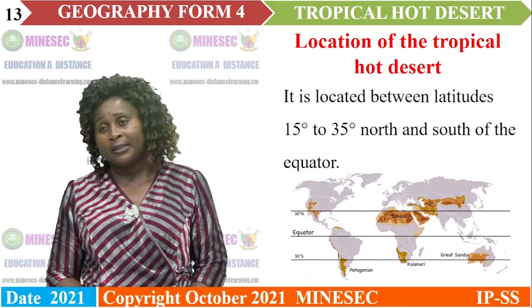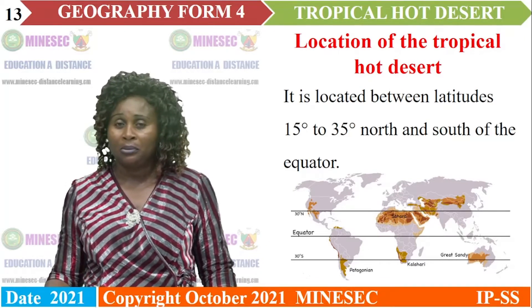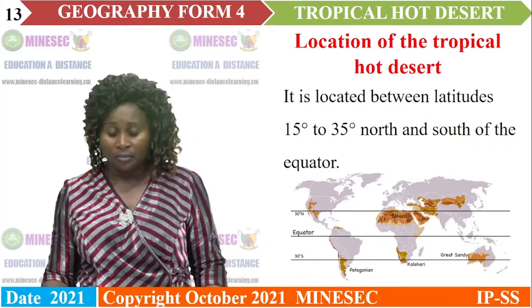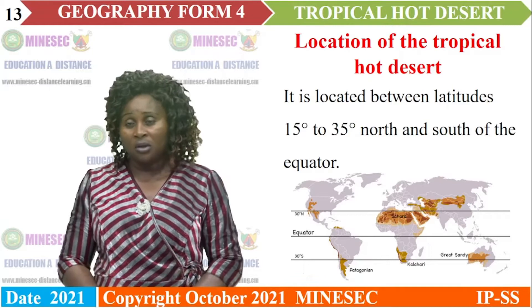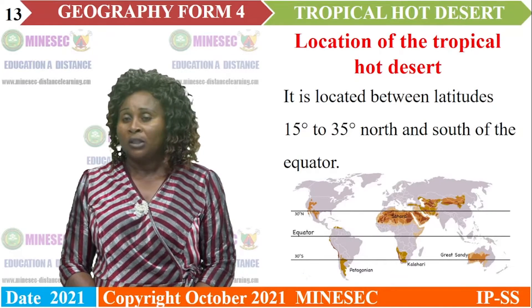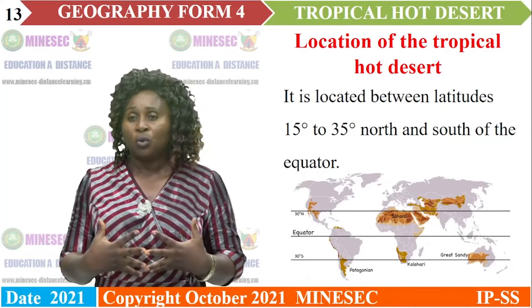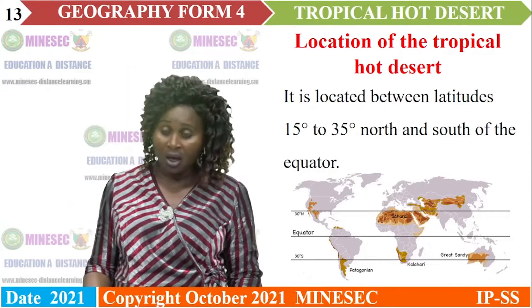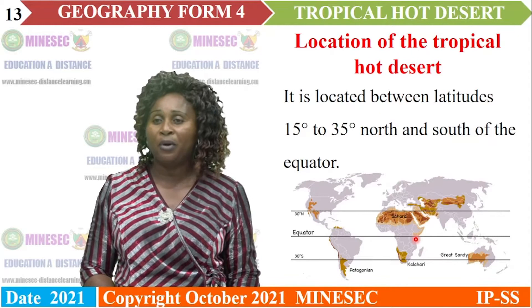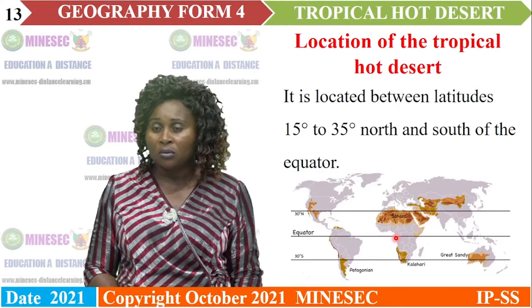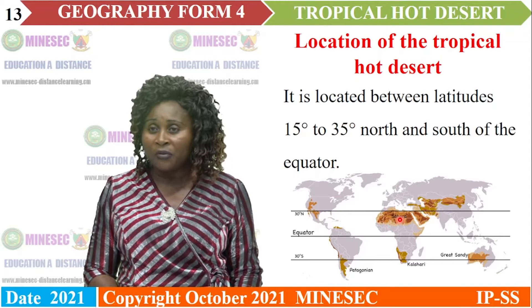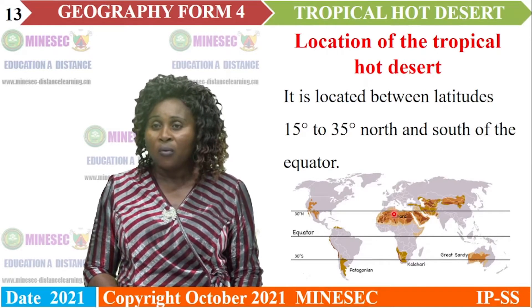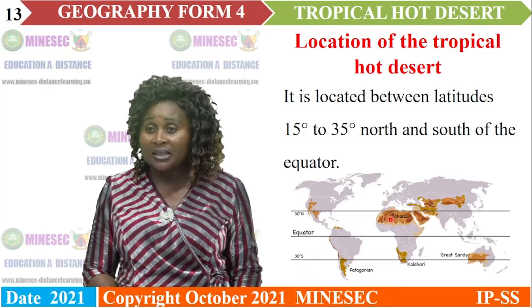The hot desert biome — where is it found? The hot desert biome is located between latitudes 15 to 35 degrees north and south of the equator. Let us observe this world map. The equator divides the earth into two equal halves. From 15 degrees up to about 35 degrees, you will find hot deserts — shown here in brown color.